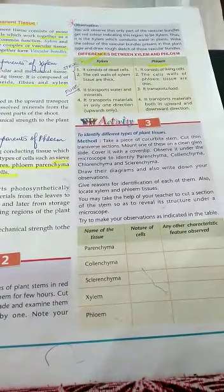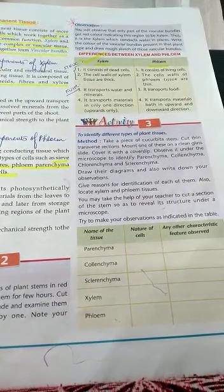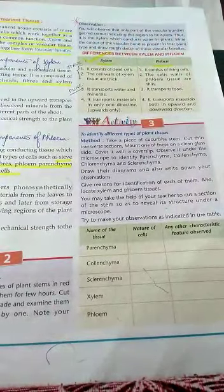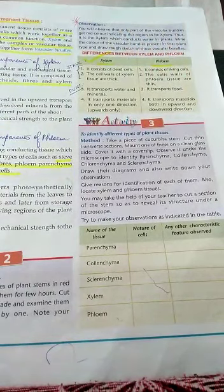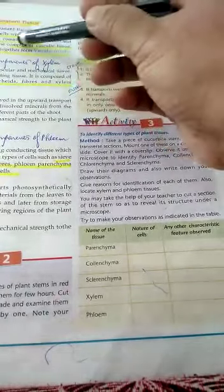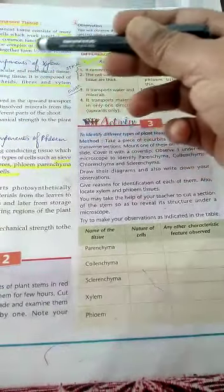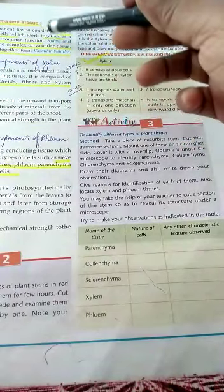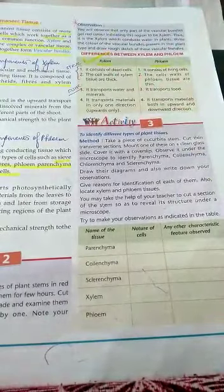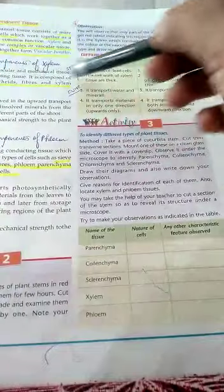Complex permanent tissue is made up of more than one type of cell, but they work together as a unit and perform a common function. Xylem and phloem are the two types of complex permanent tissue. Together they form vascular bundles, and they are called vascular tissues. The four components of xylem are vessels, tracheids, fibers, and xylem parenchyma.